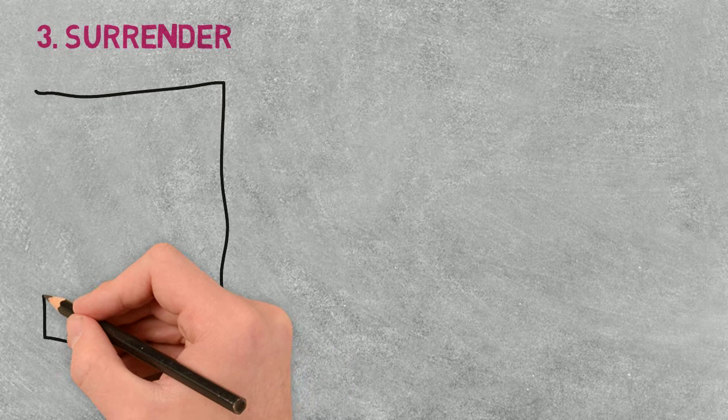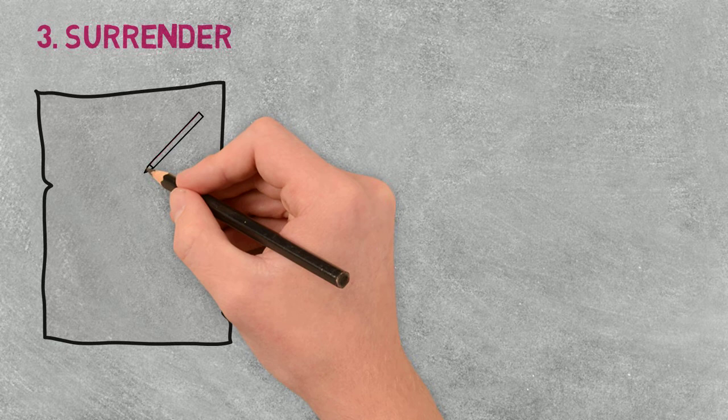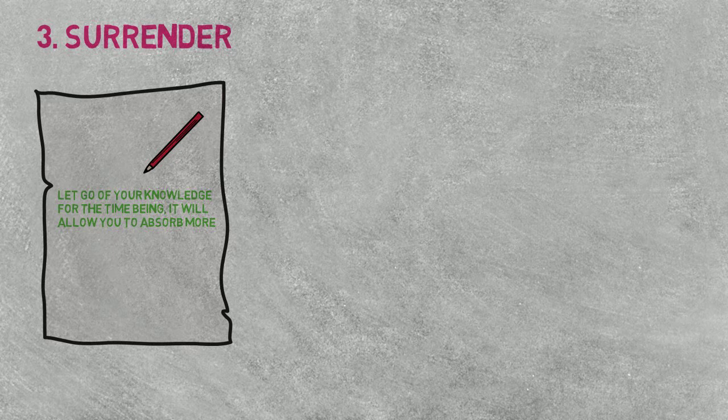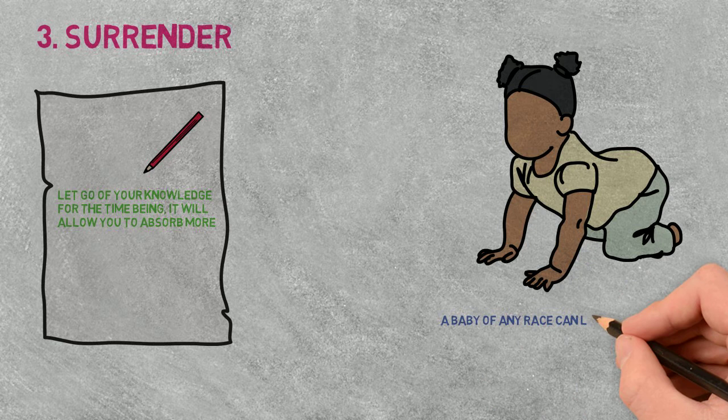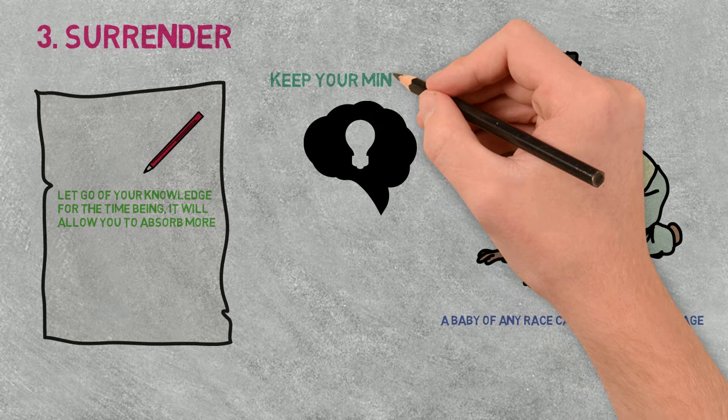Tip number three, surrender. It is much easier to draw on a blank sheet of paper than it is to draw on one that's already been scribbled on. In order to learn proficiently, you have to surrender away some of your knowledge and skills and accept the fact that you once again are the beginner venturing towards a new goal. Like a baby is able to learn any language on this planet because they come as a blank sheet of paper ready to be drawn on, you too can do the same, by emptying and opening up your mind to new ideas and fundamentals.